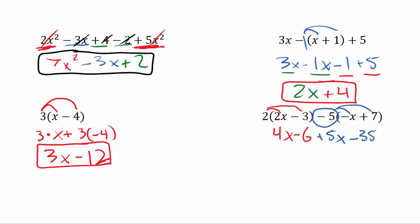Okay, now we'll look for like terms here. I've got a 4x and a 5x, which gives me a 9x. And now I've got 2 negative numbers here to combine. Remember, the 2 negative numbers will give me a bigger negative number. So negative 6 minus 35 is a minus 41. And now it looks like we are finished. 9x and negative 41 will not combine.